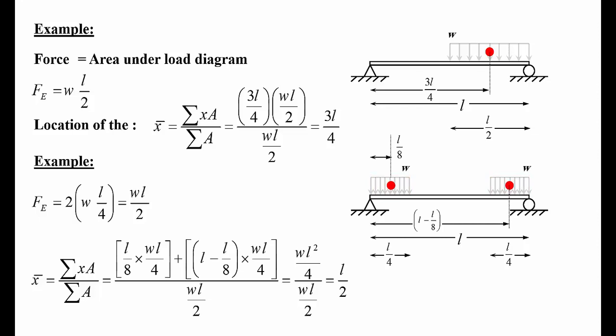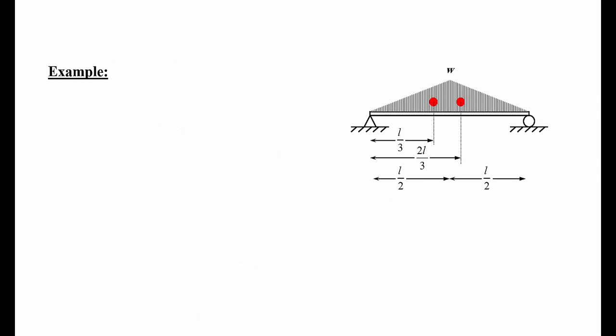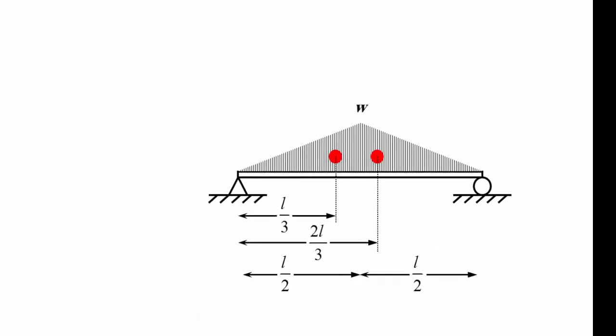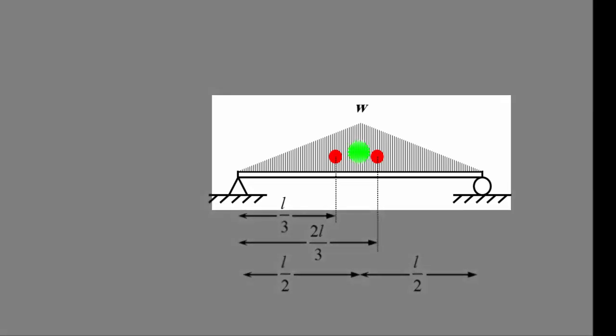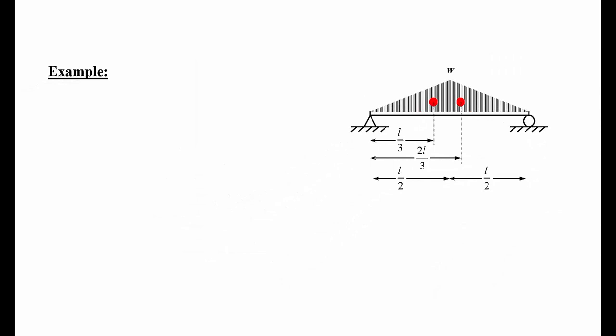Now a more challenging-looking example with a triangular load. The easy observation is that this triangle load has its centroid at mid-span as a whole piece from A to B. However, I'll do this the long way to illustrate the method: I divide it into two triangles. The first triangle has area = (1/2) × W × (L/2) = WL/4, and with two identical triangles the total area is WL/2.